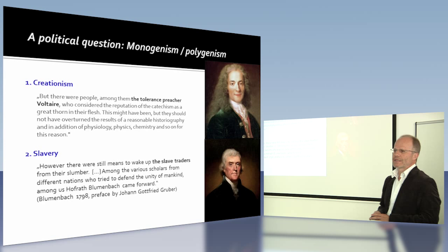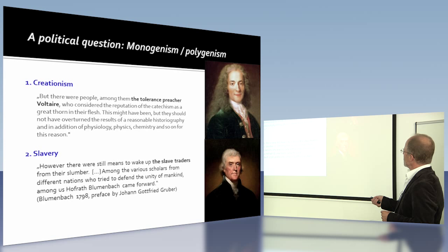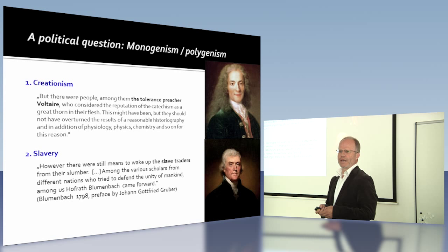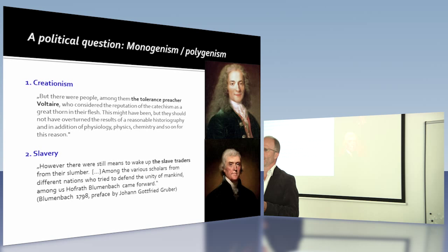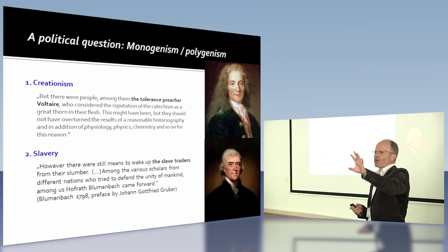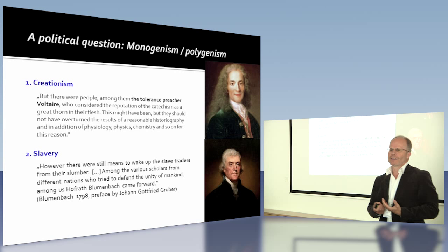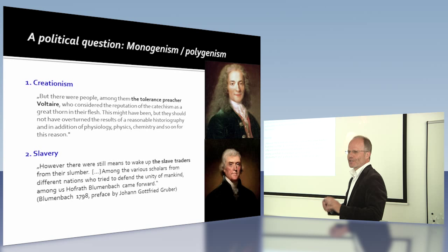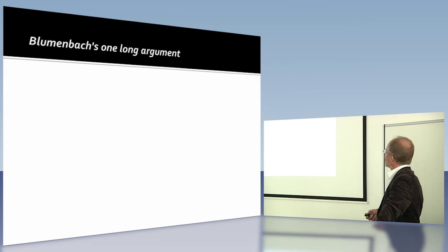And of course there was the question of slavery. From the preface by Johann Gottfried Gruber, Blumenbach's intention of the book is to wake up the slave traders from their slumber. I put Thomas Jefferson here — he was not a slave trader of course, but he was a slave owner. While Gould says Blumenbach was promoting racism, he says Jefferson was promoting anti-racism, and I find this a little strange — that a slave owner would be the positive figure depicting anti-racism.